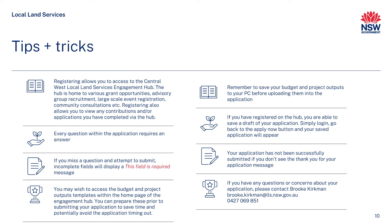You may wish to access the project outputs and budget templates within the homepage of the Hub. You can prepare these prior to submitting to save time and avoid application timeout. Remember to save your budget and project outputs to your computer before uploading them into the application. If you have registered on the Hub, you are able to save a draft of your application. Simply log in, go back to the Apply Now button, and your saved application will appear. Your application has not been successfully submitted if you do not see the 'Thank you for your application' message.